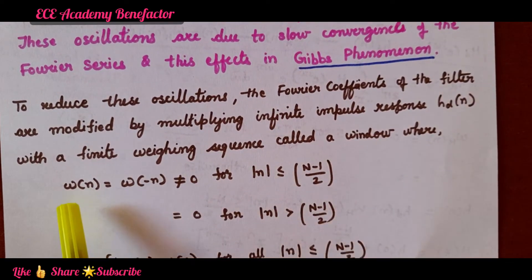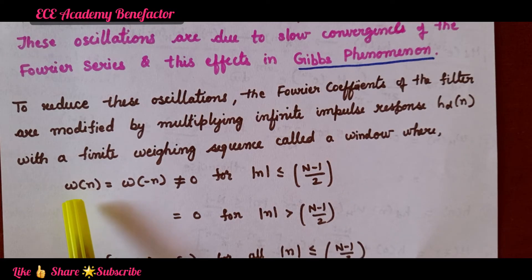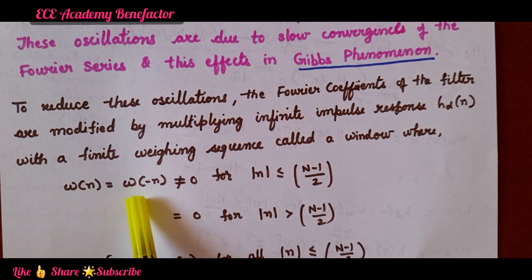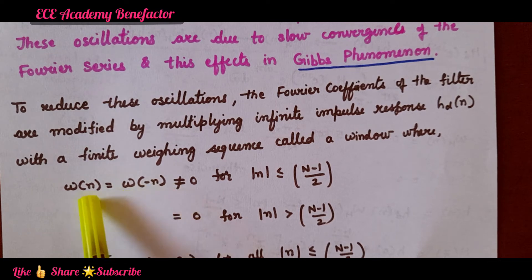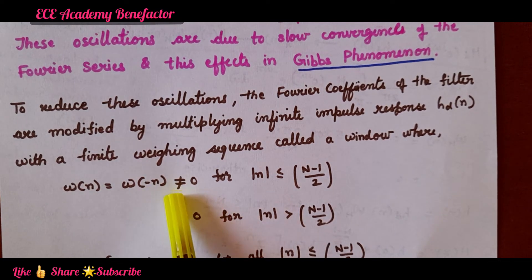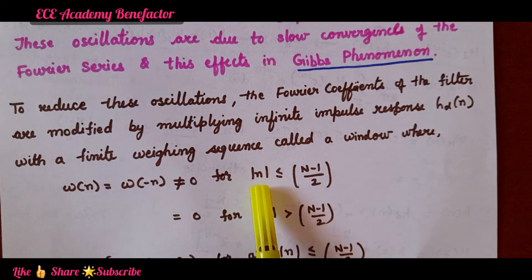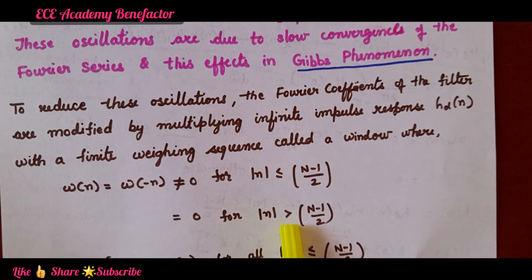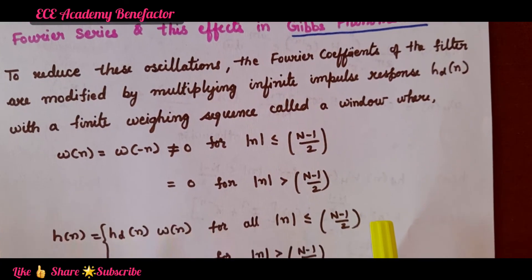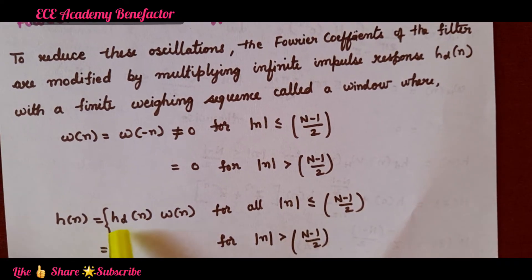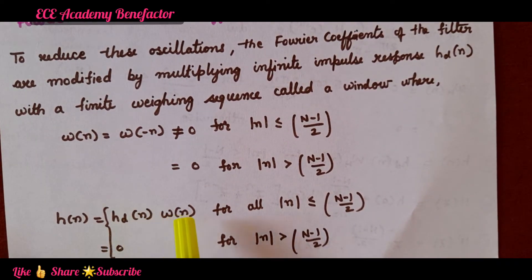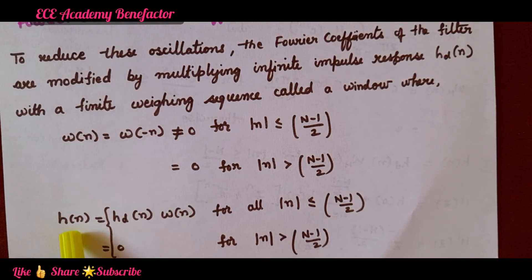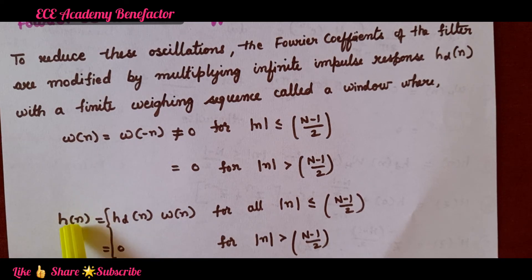What is the definition of window? W(n), denoted by W of n, satisfies: W(n) = W(−n) — that is, it has a symmetrical nature — and is not equal to 0 for |n| ≤ (N−1)/2, and is 0 for |n| > (N−1)/2. So H_d(n) of infinite length is multiplied by this finite weighing sequence to get H(n), which is a finite impulse response or finite Fourier coefficients. It will avoid Gibbs phenomenon.